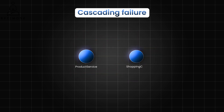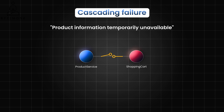The circuit breaker is crucial for preventing or minimizing such cascading failures. For example, a circuit breaker in the shopping cart service could prevent it from repeatedly calling the failing product service, allowing it to display a message such as "product information temporarily unavailable" instead of crashing. The circuit breaker acts as a proxy, monitoring the operation's success and deciding whether to allow it to proceed, return an exception immediately, or wait for a specified time before trying again. It acts as an intelligent gatekeeper, regulating the flow of requests based on the health of the microservice.